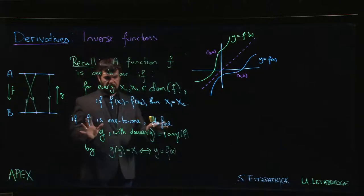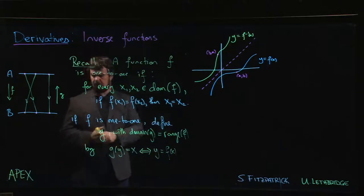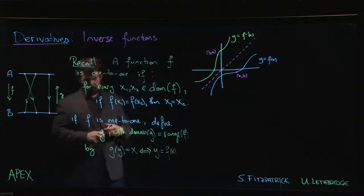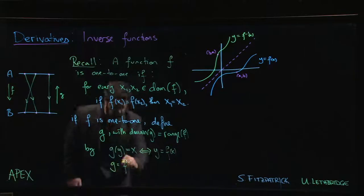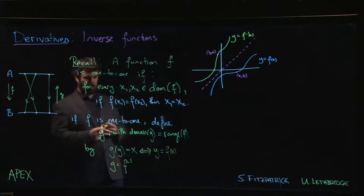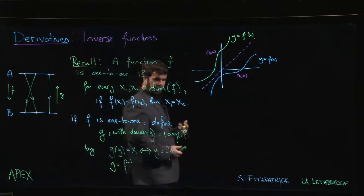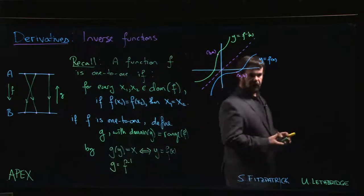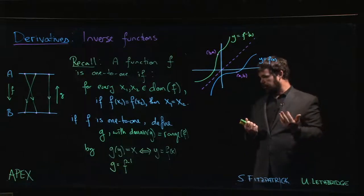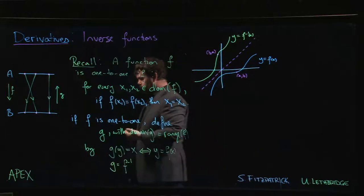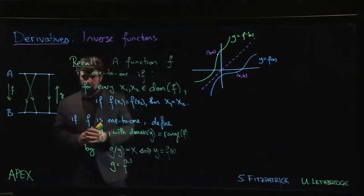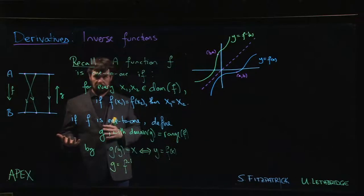So the standard notation, this function that we're able to define by reversing the arrows, as it were, is usually denoted by f to the minus 1. And a lot of people will find this notation confusing. It's not an exponent. The notation comes from algebra, essentially.